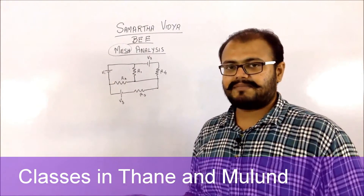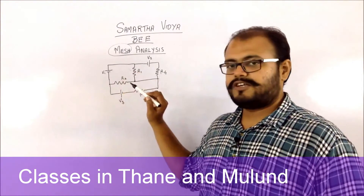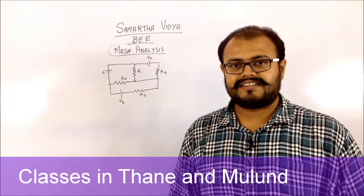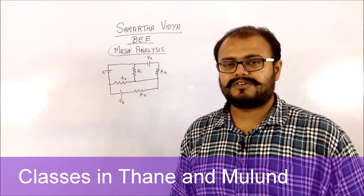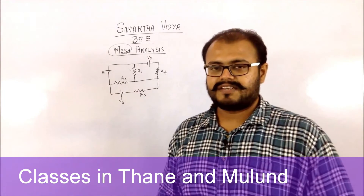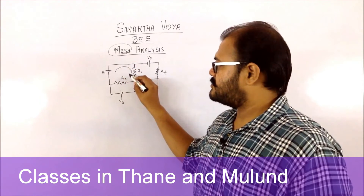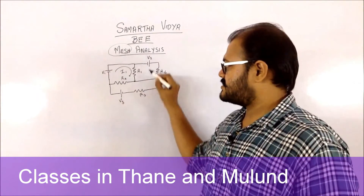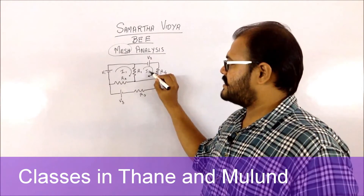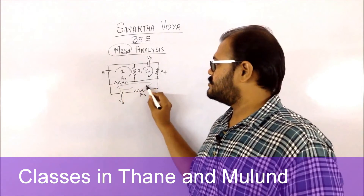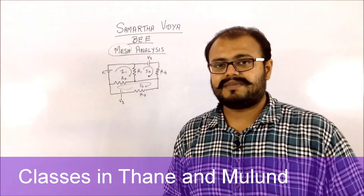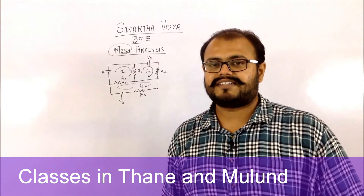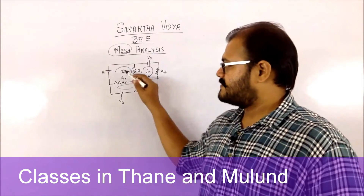So basically, this particular one is one mesh, this is the second mesh, and this one is the third mesh. Once you have identified the meshes, you assign three different current variables: I1 for the first mesh, I2 for the second mesh, and I3 for the third mesh. The direction of current is chosen by you — if you get a negative value, it means you have taken the wrong direction and need to reverse it.